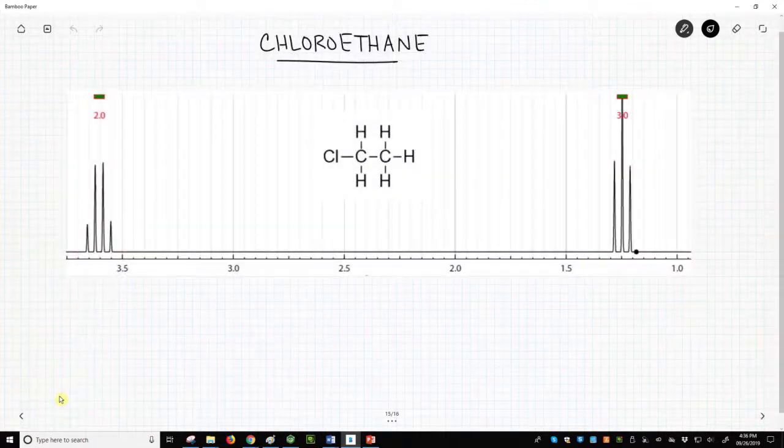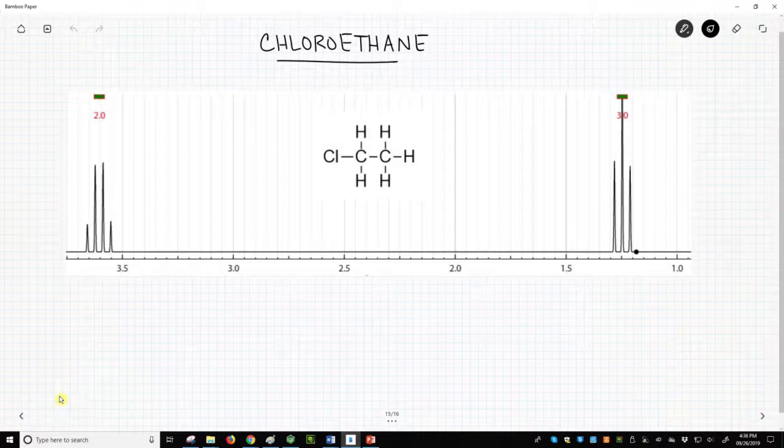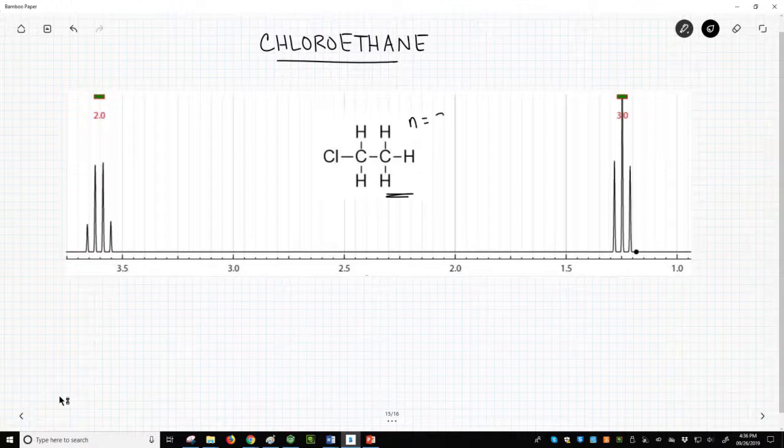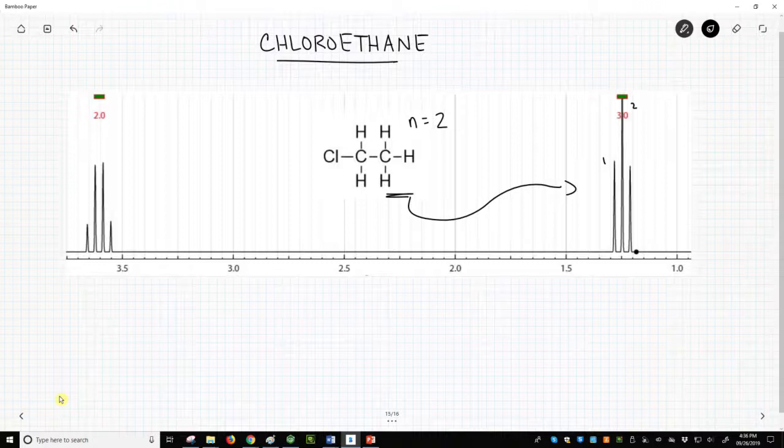Let's see two molecules to reinforce these ideas. Here again is chloroethane with its spectrum. The CH3 on the right has two neighboring hydrogens. N equals 2. So the multiplicity is equal to 3. The CH3 hydrogens should appear as a triplet. They do, and it has a relative intensity of about 1 to 2 to 1.